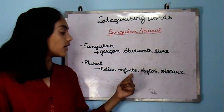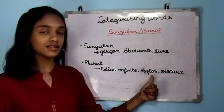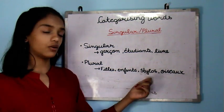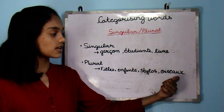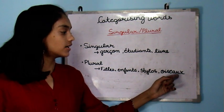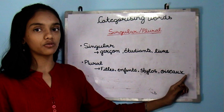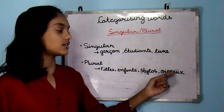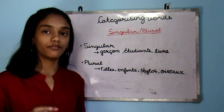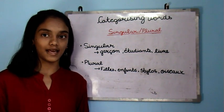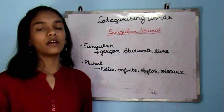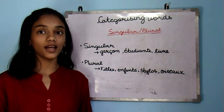Filles means girls. Stylos means pens. Oiseaux, which means birds — filles and stylos have 's' at the end, and oiseaux has 'x' at the end. Mainly words end in 's' in plural, but words which end in 'u' when converted to plural become 'x', not 's' — so it's 'u' + 'x', not 'u' + 's'. Keep that in mind. So singular words do not end with 's' or 'x', and plural words end with 's' or 'x'. When a word ends with 'u', in plural we add 'x', not 's'.